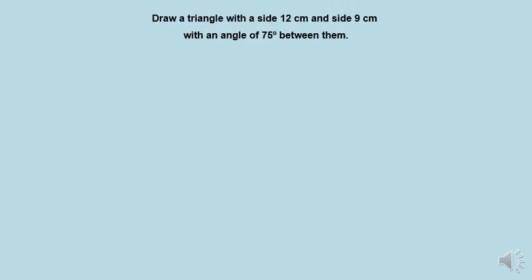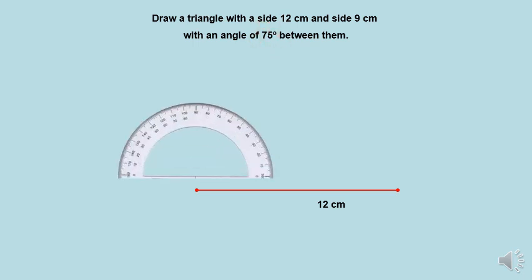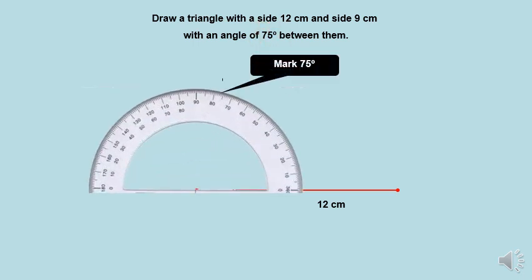Okay, draw a triangle with a side 12 cm and a side of 9 cm with an angle 75 degrees between them. First, we start drawing with the longest side which is 12 cm. Then, we draw the angle side angle side which is 75 degrees from the ruler.